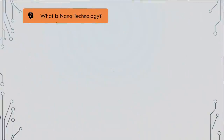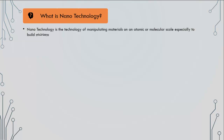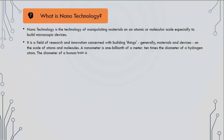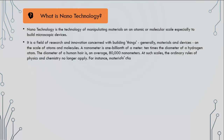What is nanotechnology? Nanotechnology is the technology of manipulating materials on an atomic or molecular scale, especially to build microscopic devices. It is a field of research and innovation concerned with building things — generally materials and devices — on the scale of atoms and molecules. A nanometer is one billionth of a meter, ten times the diameter of a hydrogen atom. The diameter of a human hair is, on average, 80,000 nanometers.